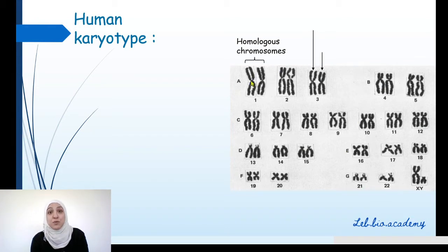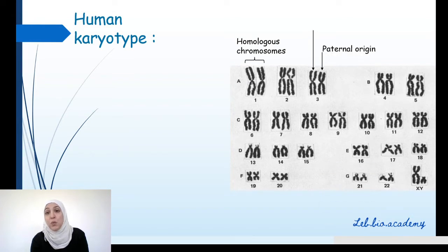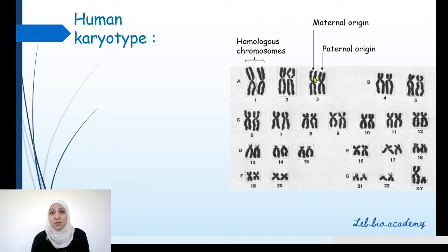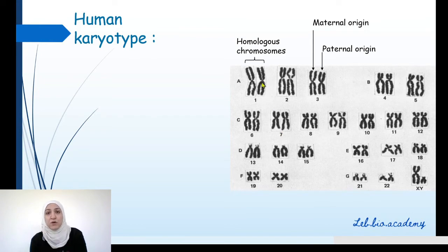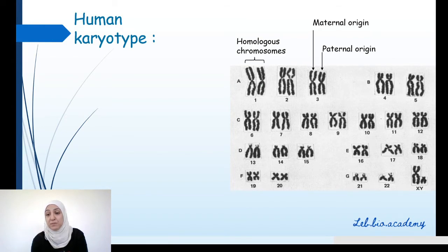The two chromosomes of the same pair are called homologous chromosomes. One of these chromosomes comes from the dad of this person and is called paternal origin. The other chromosome of the same pair comes from the mom and is called maternal origin. So in each pair, one chromosome is of maternal origin and the other is of paternal origin.